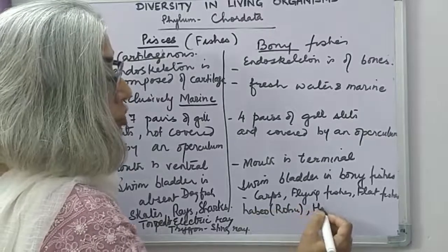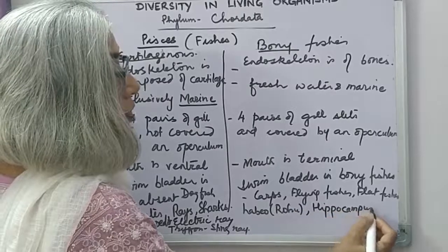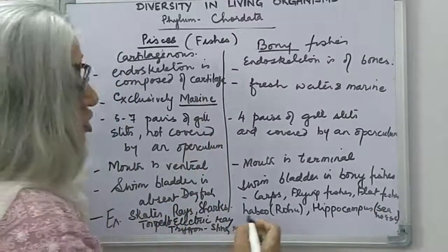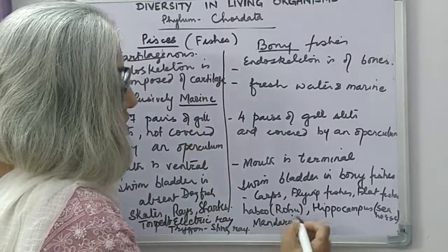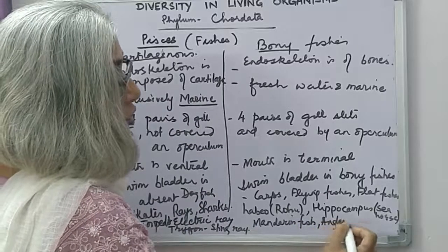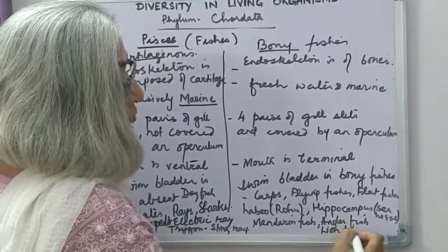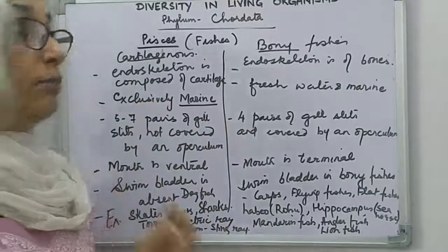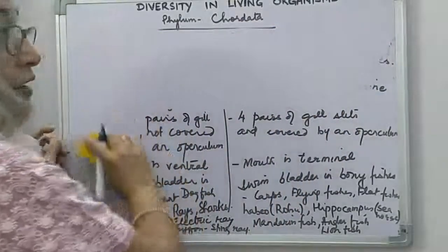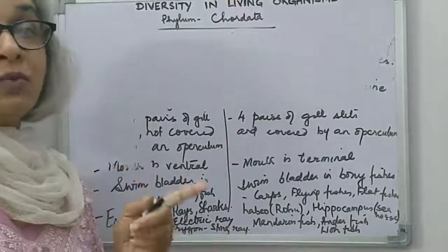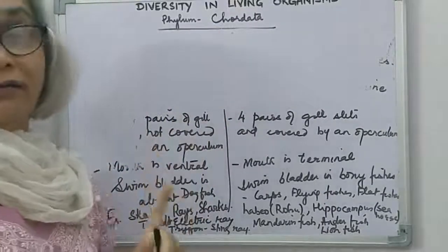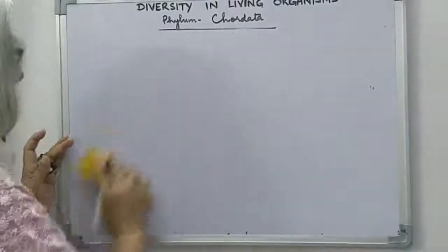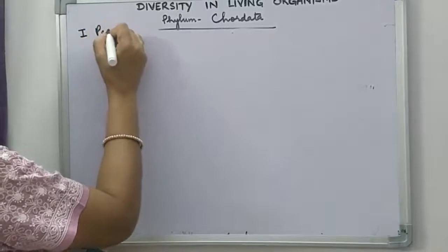Other bony fish examples include the seahorse, called hippocampus. Besides this there are some ferocious and dangerous fishes like mandarin fish, angler fish, and lion fish — these are ferocious bony fishes found in marine waters. So these were the characteristics with examples of class Pisces of phylum chordata. Phylum chordata has been divided into five classes. Now we move on to the second class, which is Amphibia.